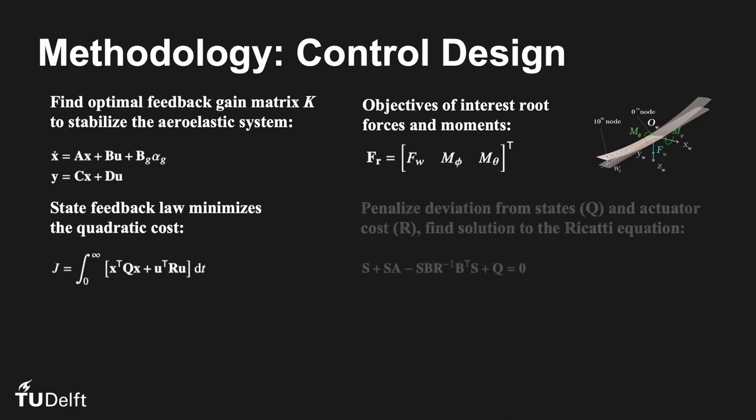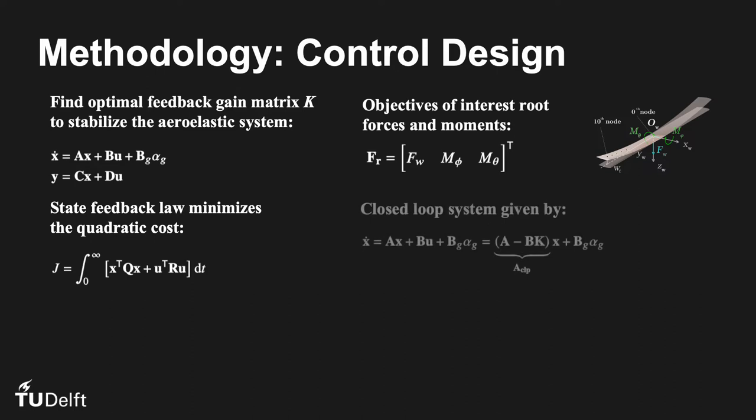The state feedback law minimizes the quadratic cost function designed around the objectives, where the deviation from the reference and the actuator cost is penalized, given by matrices q and r. And this Riccati equation yields the solution to the optimal feedback. The closed-loop system can then be defined after the inclusion of the gain matrix.